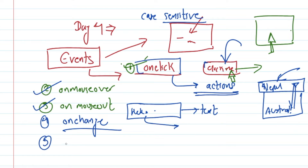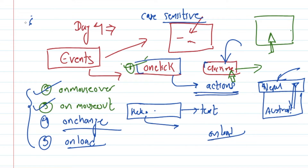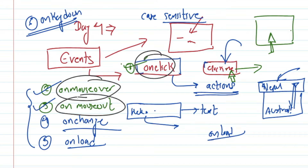Another very important event is the onload event. Onload is called when the browser loads — for example, when you open a page in the browser, you can use the onload event. There is also the onkeydown event — if you press a key, you can use keypress. So the events covered are: onclick, onmouseover, onmouseout, onchange, onload, and onkeydown.